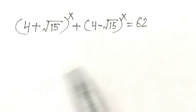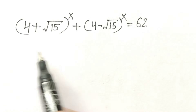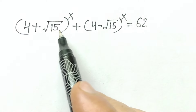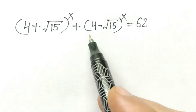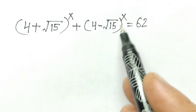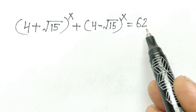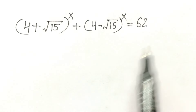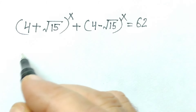Hi friends, welcome to my channel. Today we have a nice equation: (4 + √15)^x + (4 − √15)^x = 62. So how to solve this equation? Let's start.